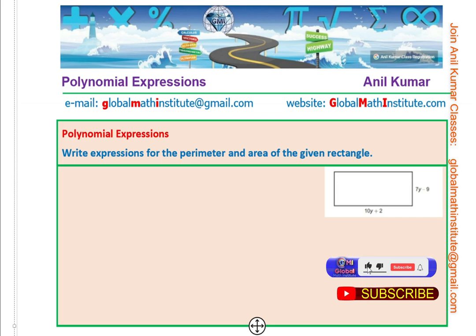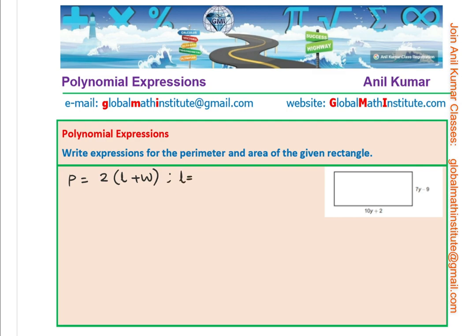So, perimeter of a rectangle is given as twice length plus width. We know what length is. So, length is equal to 10y plus 2 and width w is equal to 7y minus 9. Substituting these values, we get the perimeter which is 2 times, I prefer to use brackets, write length as 10y plus 2 and substitute w, the width as 7y minus 9.